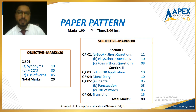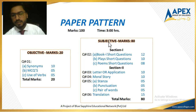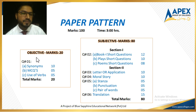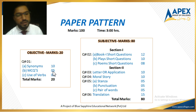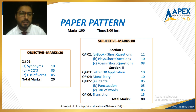Traditionally there are two parts of your paper: objective and subjective. Objective is 20 marks and subjective is 80 marks. The objective is question number one and it comprises three parts — A, B, and C. Part A is synonyms from Book 1 and Book 3, of 10 marks. Part B is multiple choice questions from Book 1 and Book 3, of five marks. Part C is use of words — all about tenses, auxiliary verbs, and types of verbs — of five marks. The major total for objective is 20 marks.